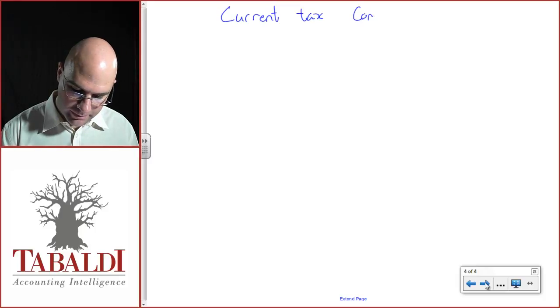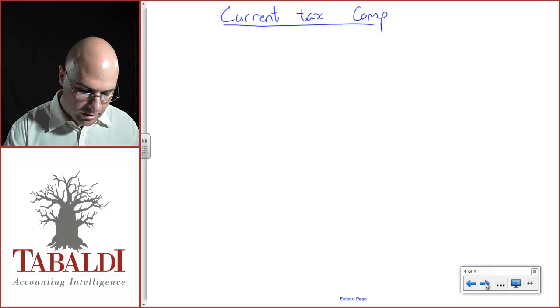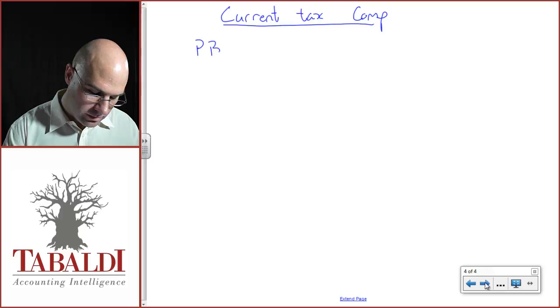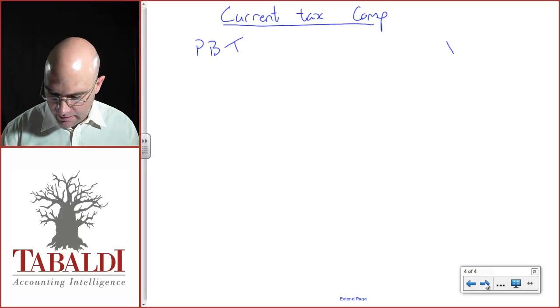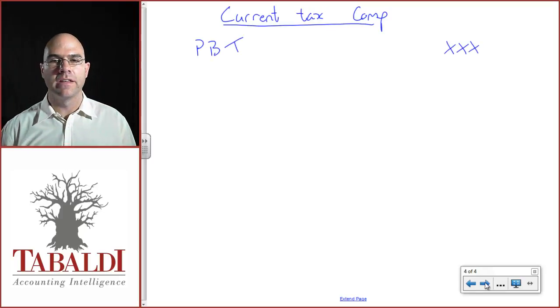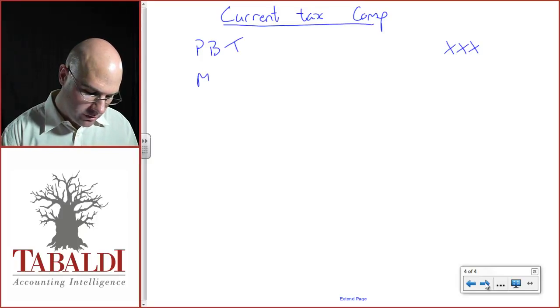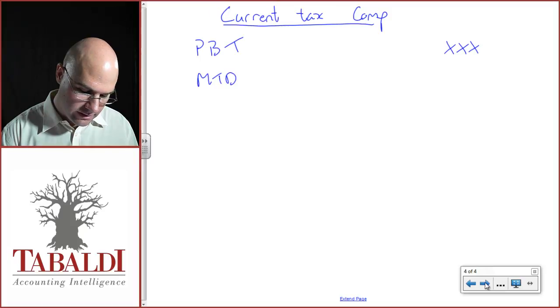So my current tax comp always starts with profit before tax. I have not given you that figure, so we'll put some x's in. There's no permanent differences here, no capital gains, no foreign income. So I can go straight into my movements in temporary differences.